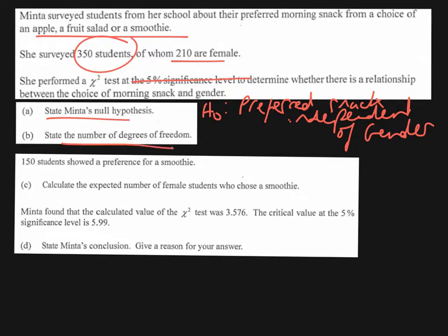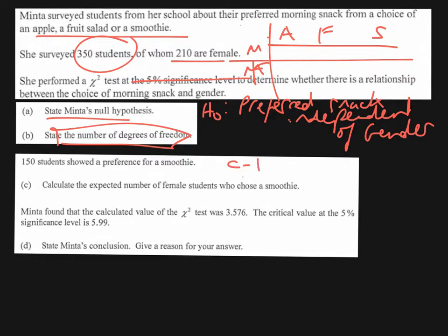For part B, state the number of degrees of freedom. Well, if we were going to put the results here, we know that we've got apple, fruit salad, and smoothie, and we're going to have male and female. The formula we use is the number of columns minus 1 multiplied by the number of rows minus 1. Here we've got 3 columns, so that's 2, and we've got 2 rows, so that's 1. 2 times 1 gives us 2, so the number of degrees of freedom is 2.